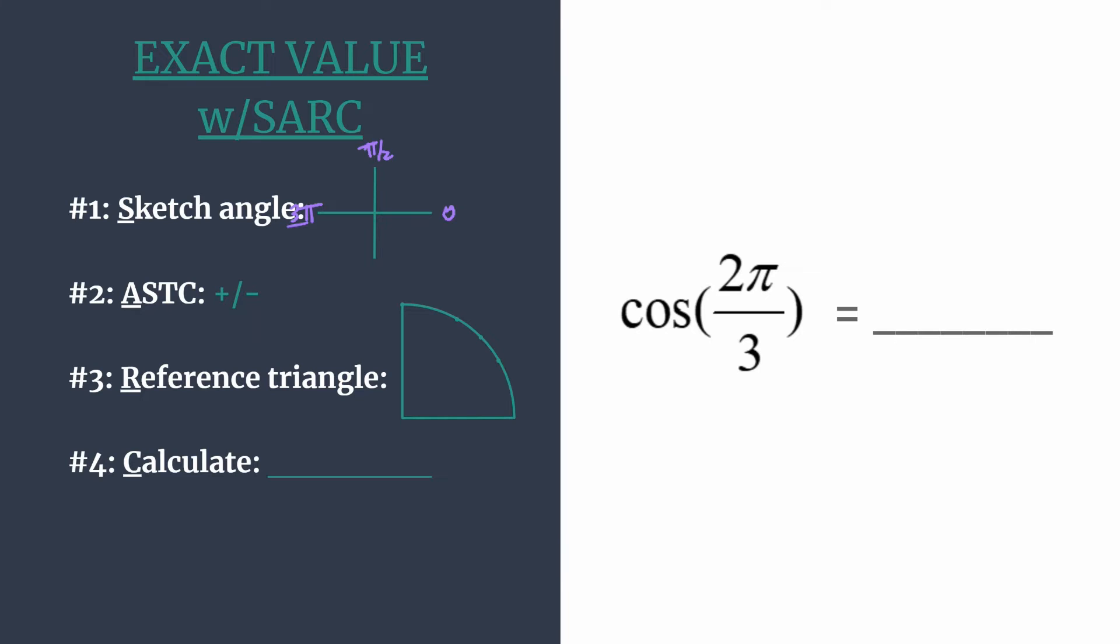And it really helps, I think, to rewrite that as 3π/3. So you have 1π/3 and 2π/3 must be here. So this is our angle, 2π/3. Alright, so that falls in the second quadrant.